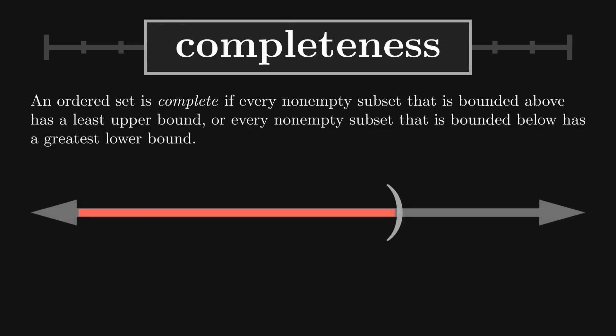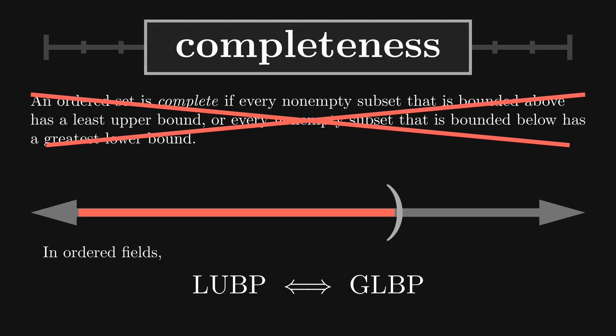For an ordered field, these two clauses are equivalent, assuming one guarantees the other. Most textbooks use the least upper bound property as the definition of completeness.